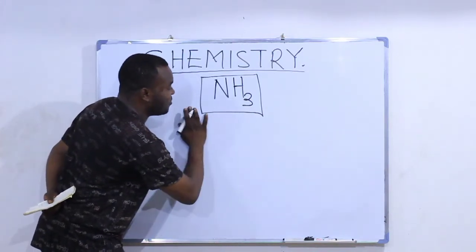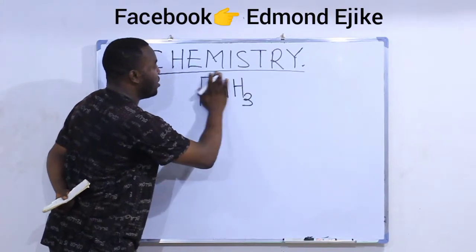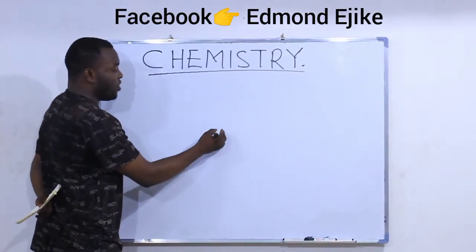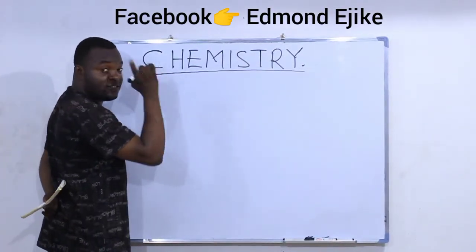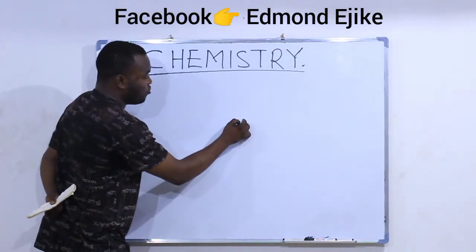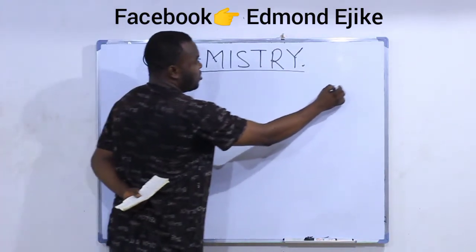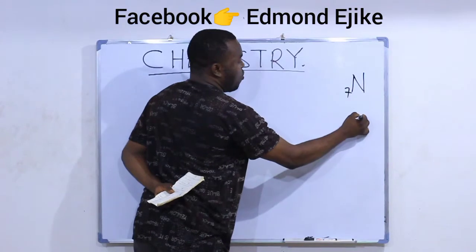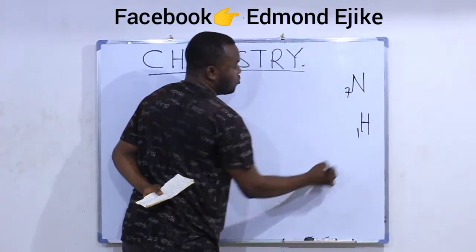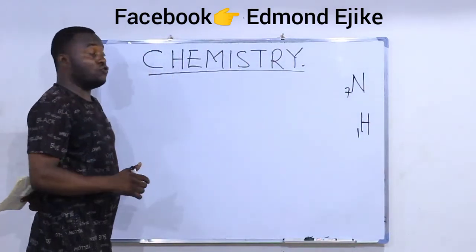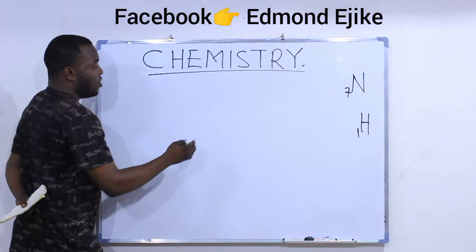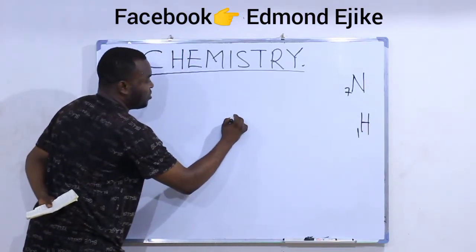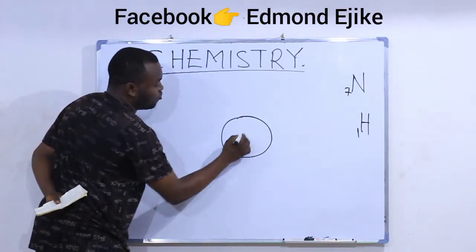Nitrogen is the central atom in ammonia, and the atomic number of nitrogen is seven. The atomic number of hydrogen is one, and there are three hydrogen atoms in ammonia. Nitrogen, being number seven, has seven electrons.